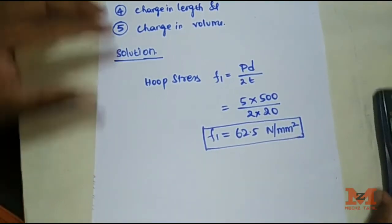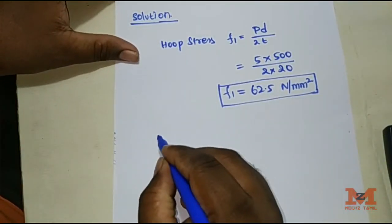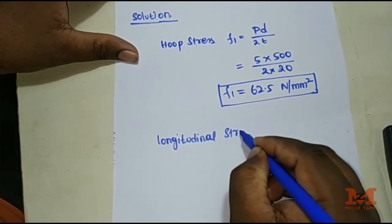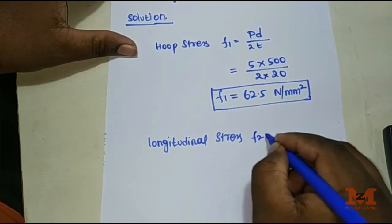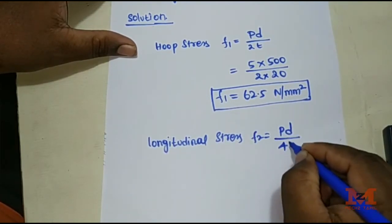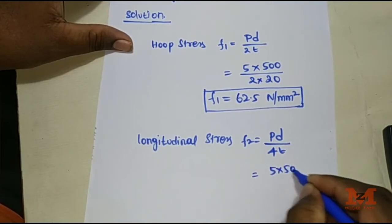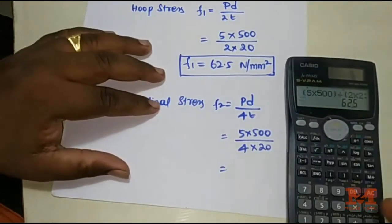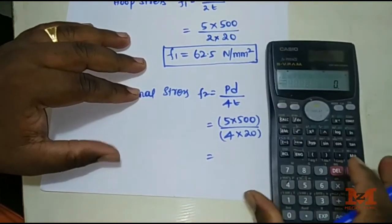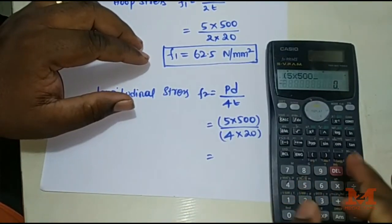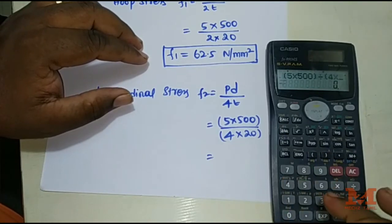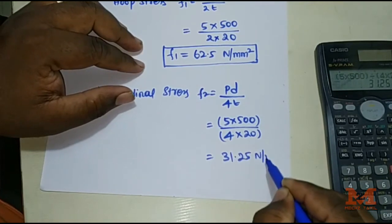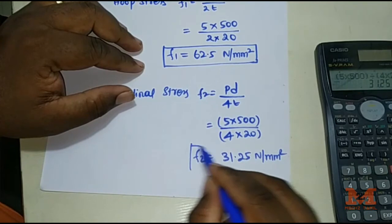Second, calculate the longitudinal stress. Formula: σ₂ = PD / 4T = (5 × 500) / (4 × 20) = 2500 / 80 = 31.25 N/mm².